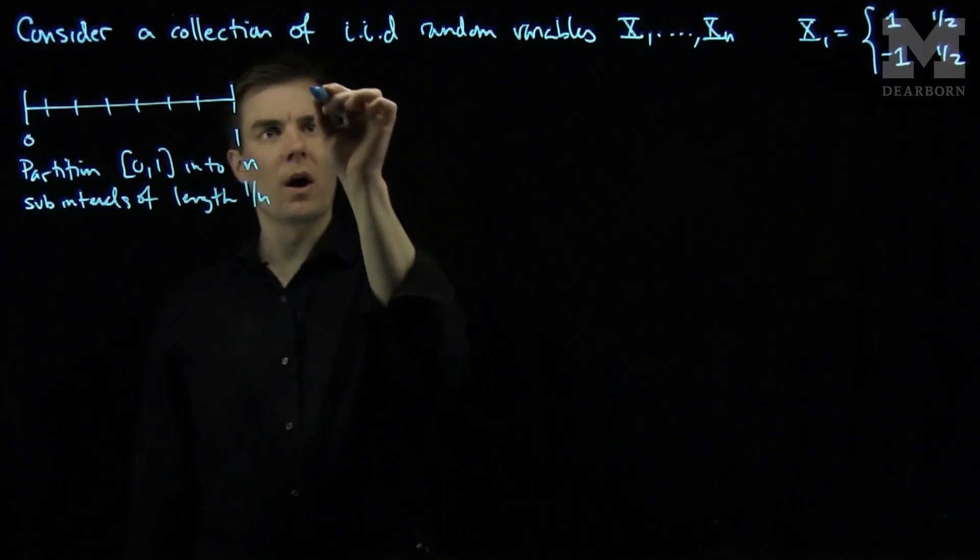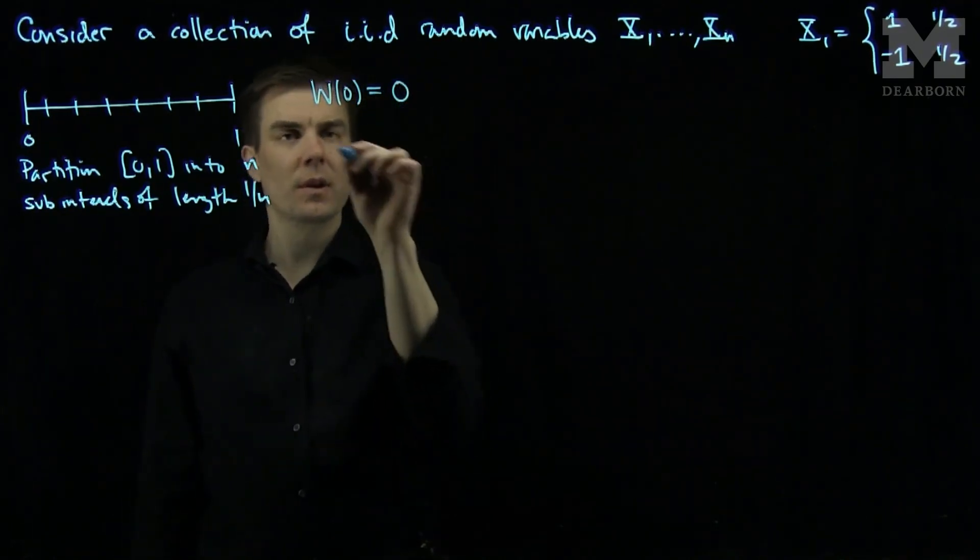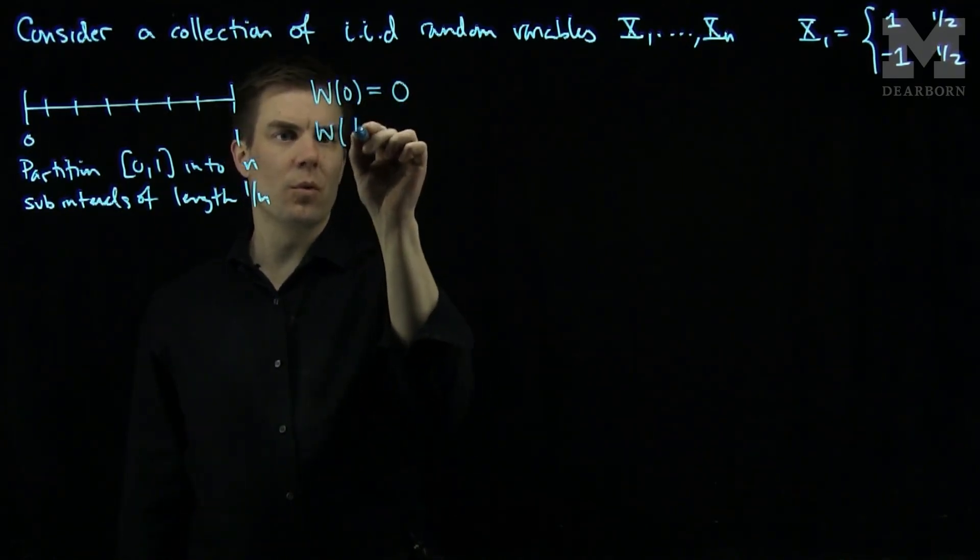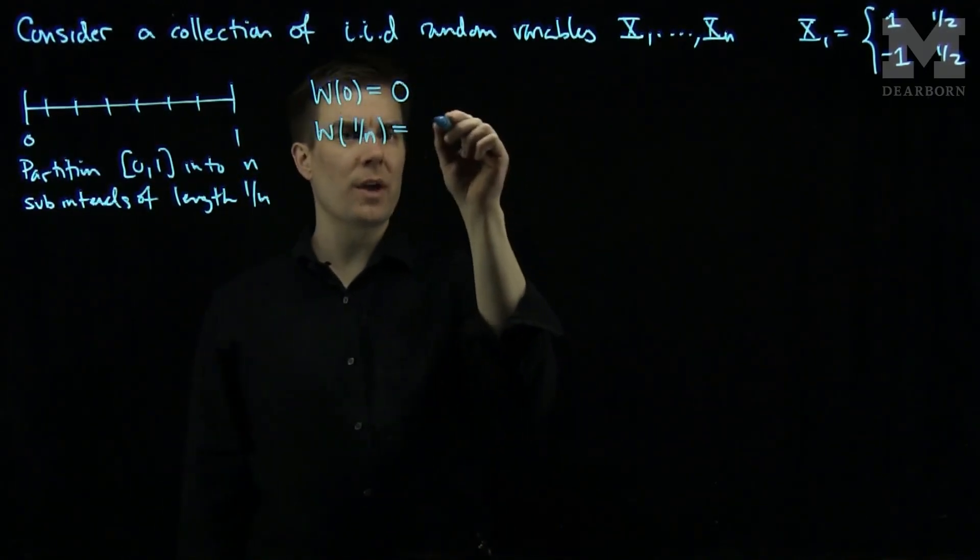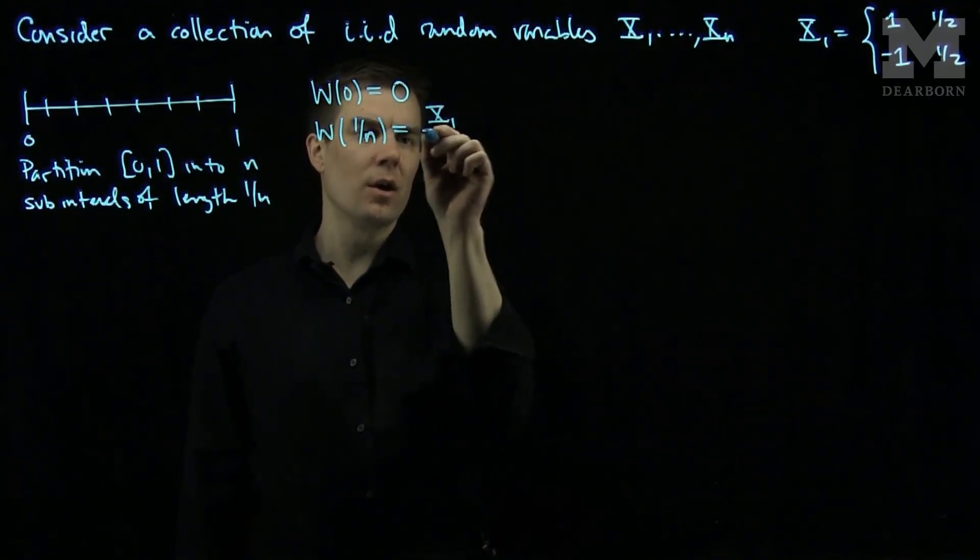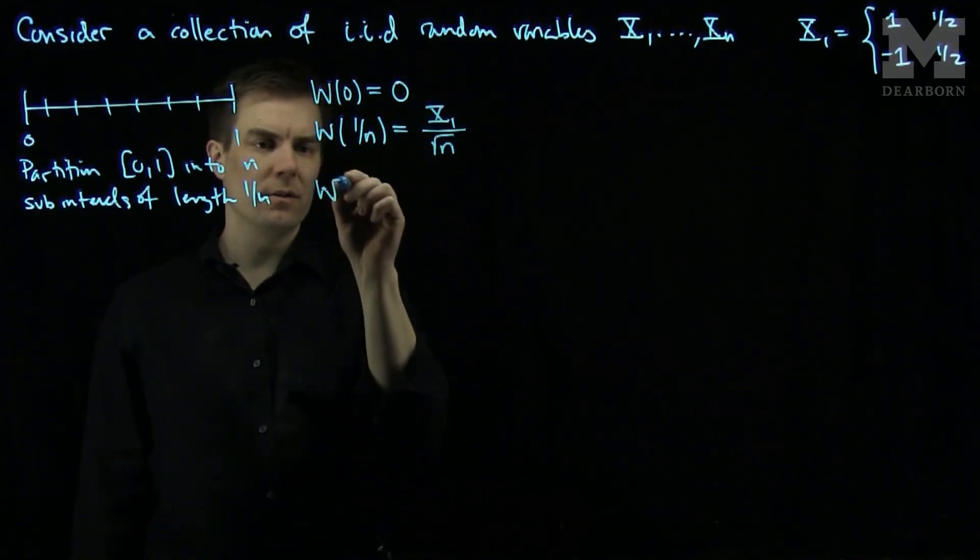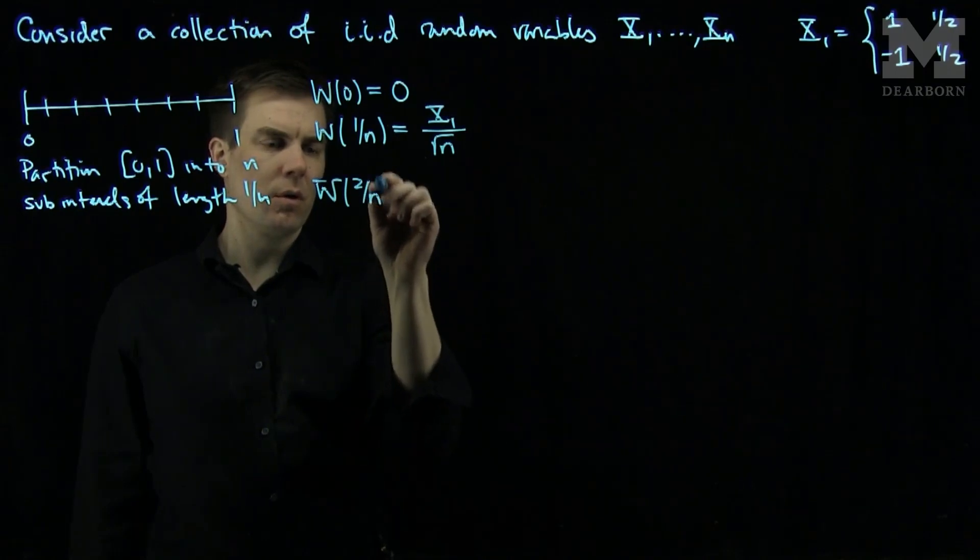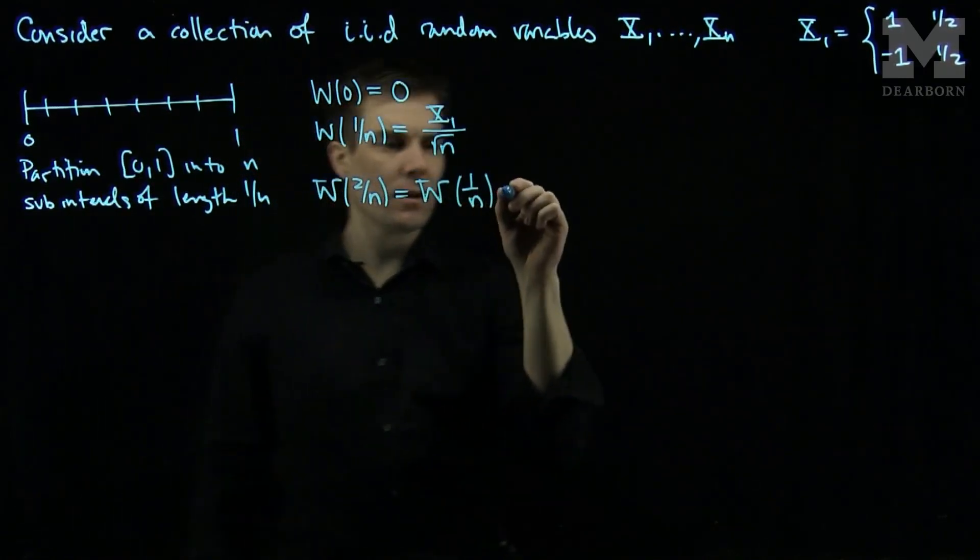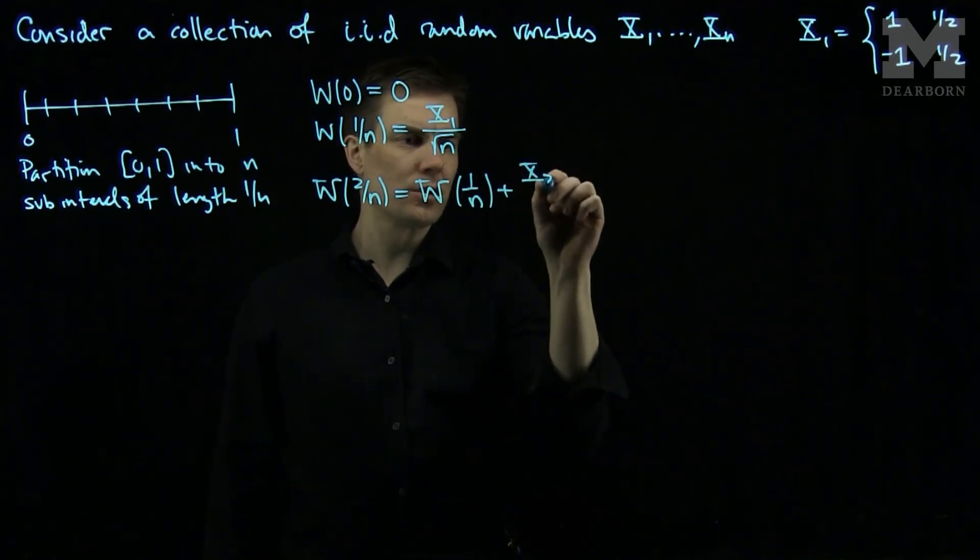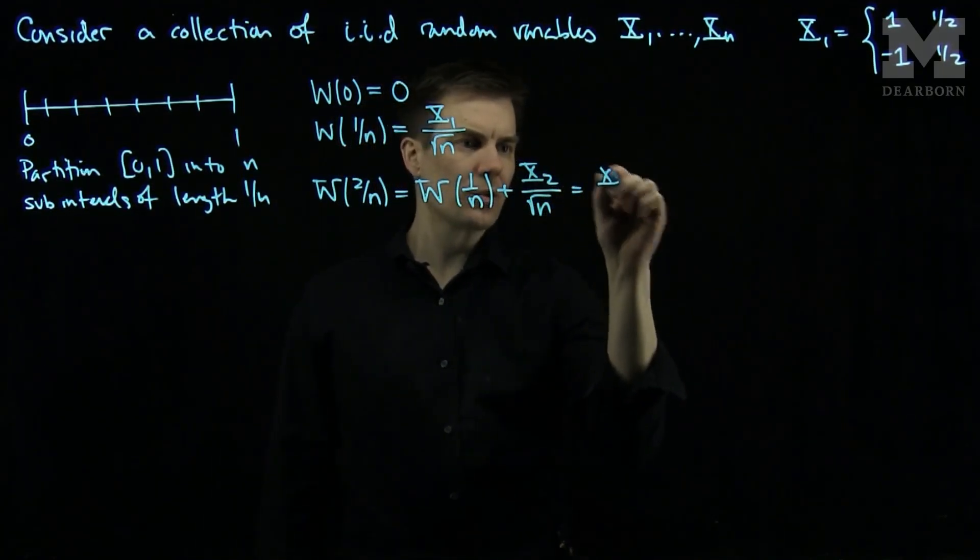We'll start our walk w0 at 0. Then we will look at w1 over n, and what I will do is I will scale it so that we have x1 over the square root of n.